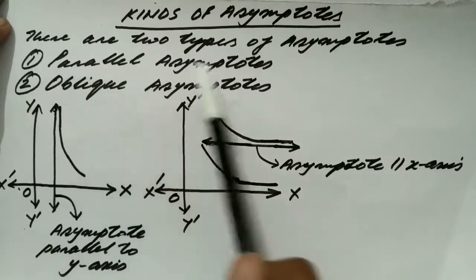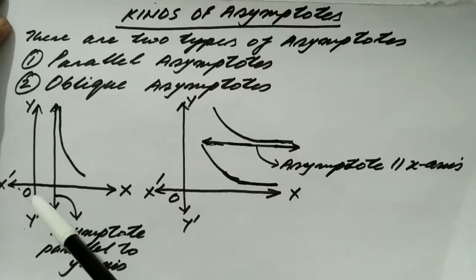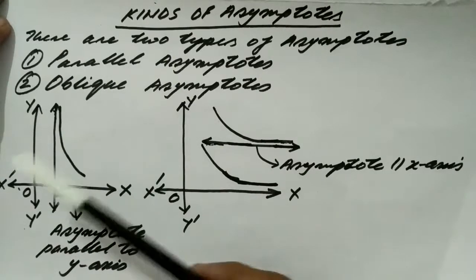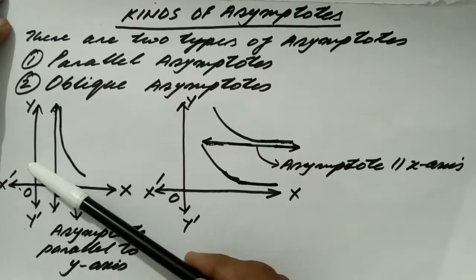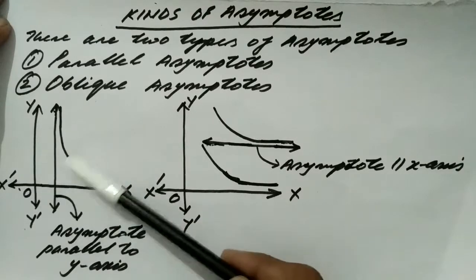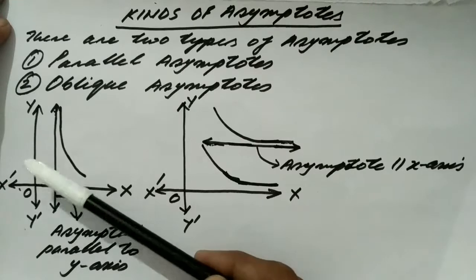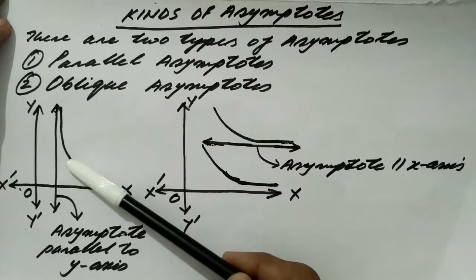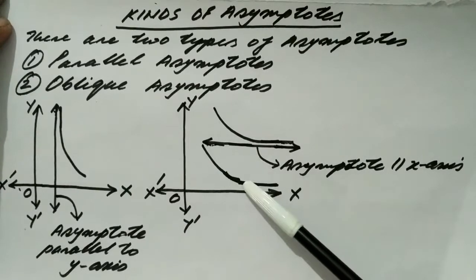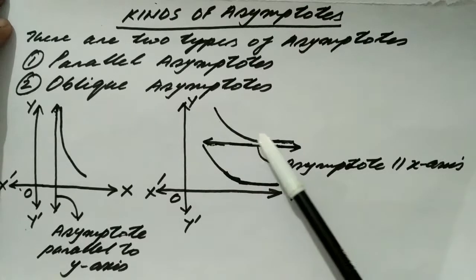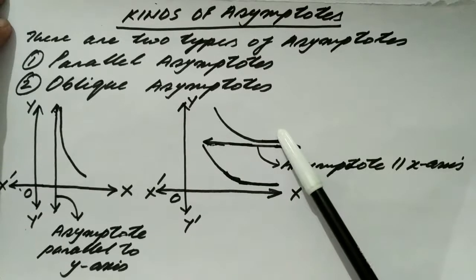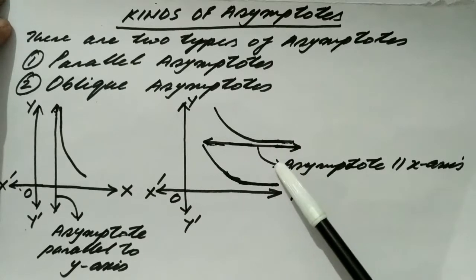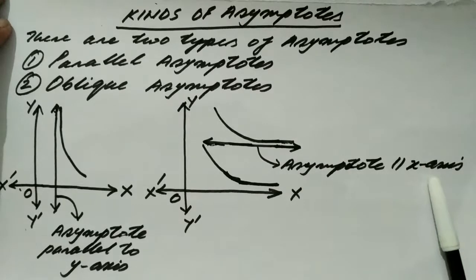Parallel asymptotes are asymptotes which are either parallel to the y-axis or parallel to the x-axis. For example, this asymptote to this curve is parallel to the y-axis — so it is called an asymptote parallel to the y-axis. Similarly, in another figure, the curve seems to be parallel to a straight line, so that straight line is an asymptote parallel to the x-axis.